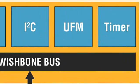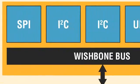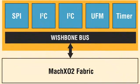In addition, several popular functions used in low-density applications, such as user flash memory, I2C, SPI, and timer counters have been hardened into the Mach XO2 devices, providing designers a do-it-all PLD for high-volume, cost-sensitive designs.